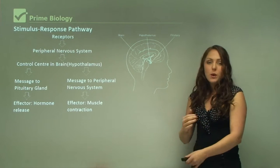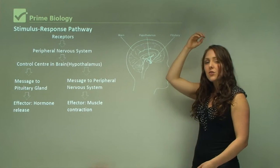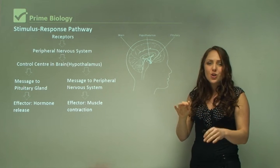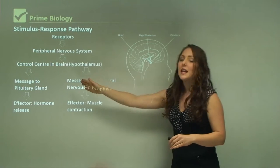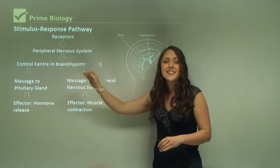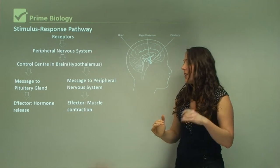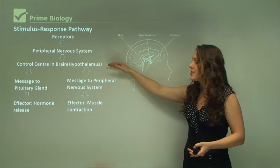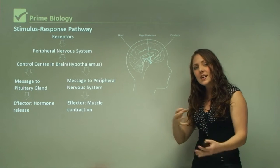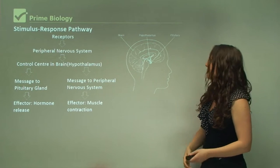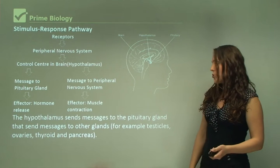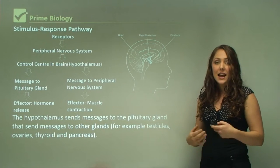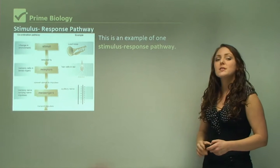The central nervous system — the spinal cord and brain — works together with the peripheral nervous system. The signal first goes to the peripheral nervous system, then to the control center in the brain called the hypothalamus. The hypothalamus reads what's happening in the internal and external environment. It may send a message to the pituitary gland to release hormones, or it may send a message back through the peripheral nervous system to cause muscle contraction. The hypothalamus sends messages to glands such as the testicles, ovaries, thyroid gland, and pancreas.